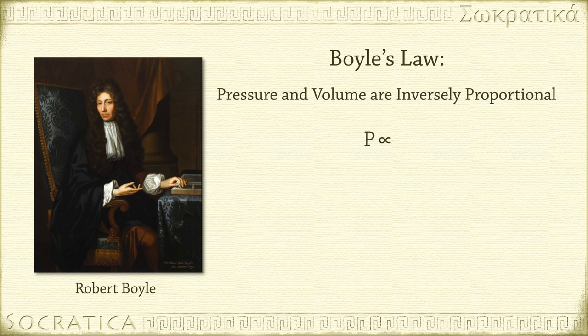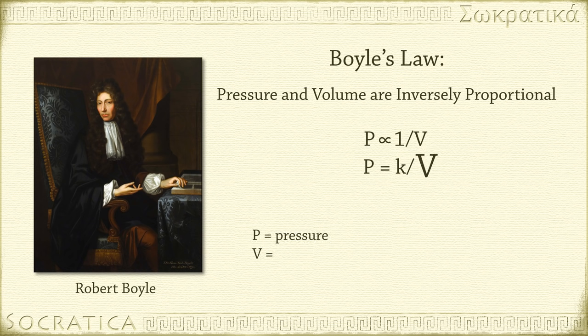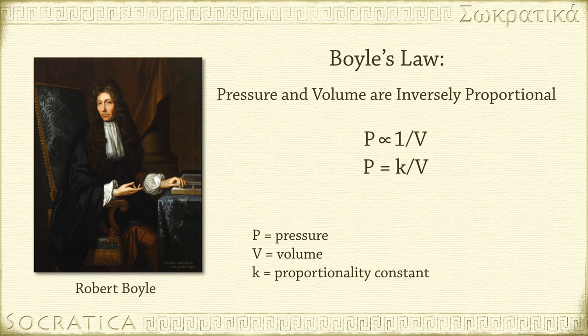P is proportional to 1 over V. You can write this mathematically as P equals K over V, where P equals pressure, V equals volume, and K is a proportionality constant. We can rearrange this equation so it reads PV equals K, or the product of pressure and volume is a constant K.